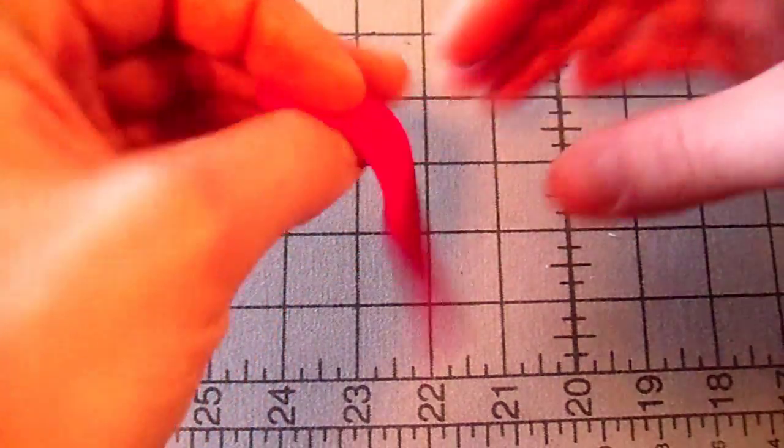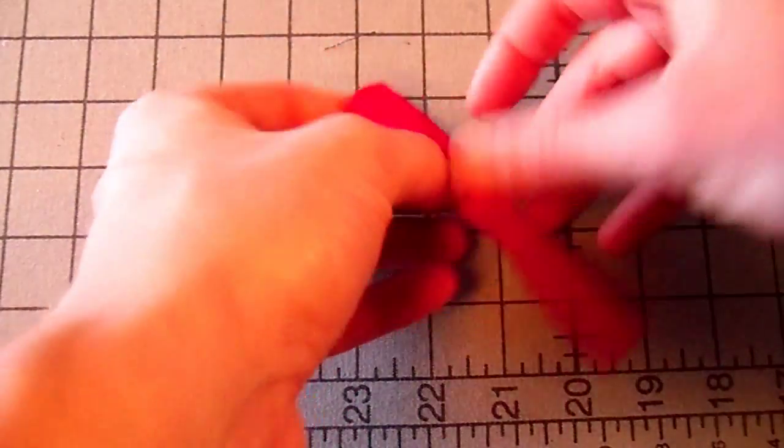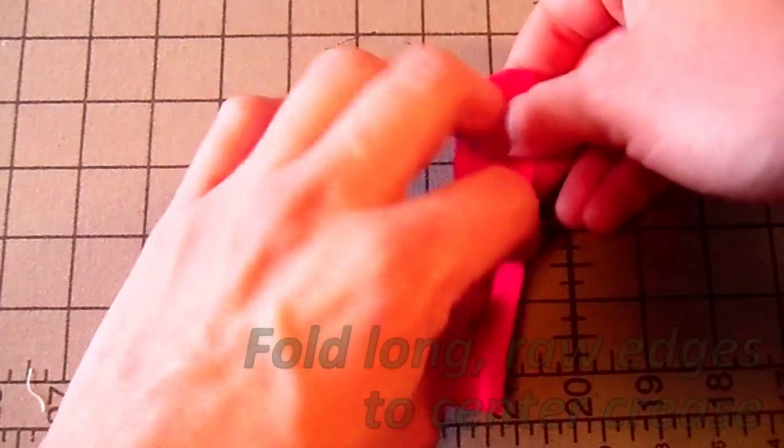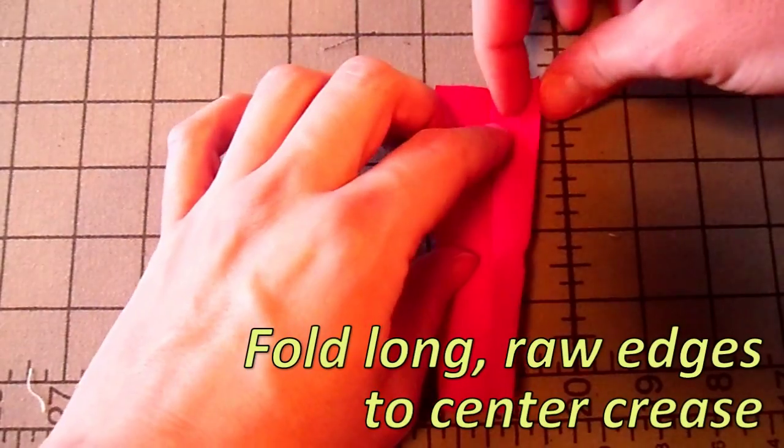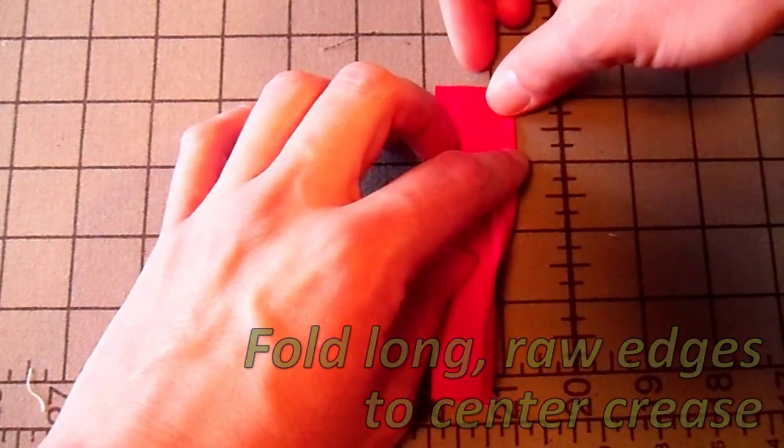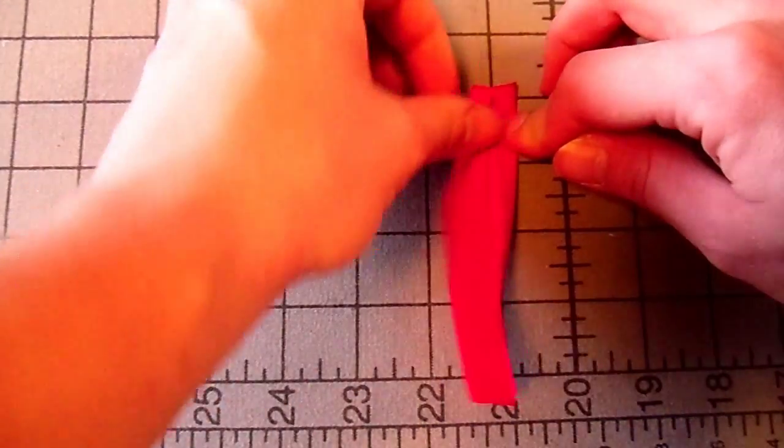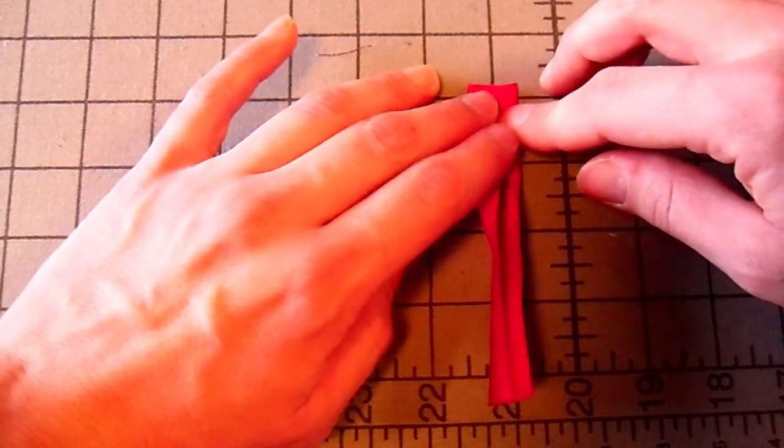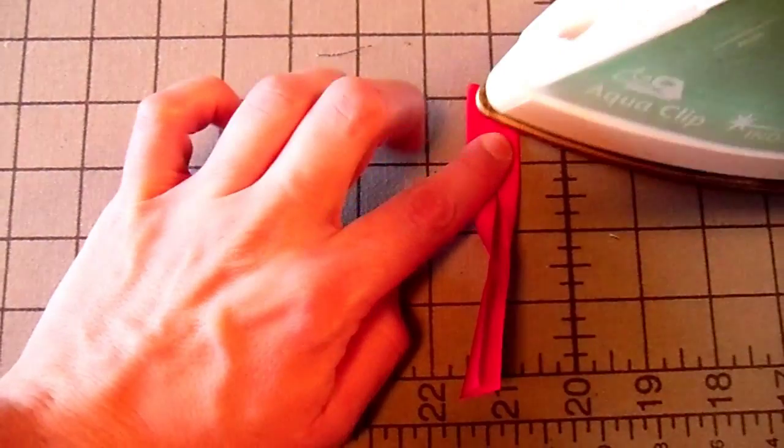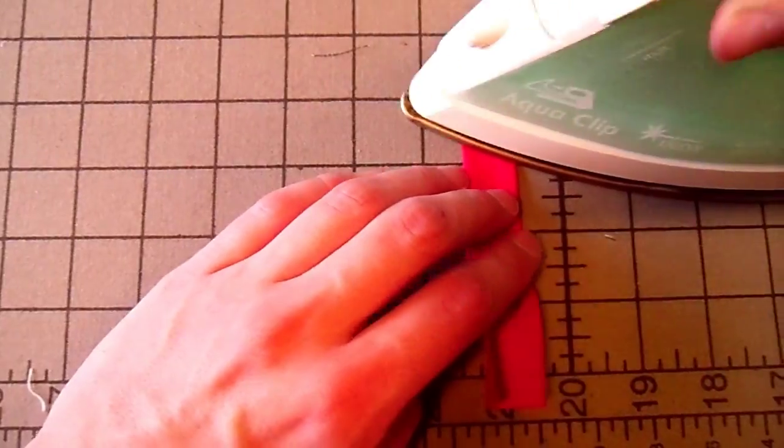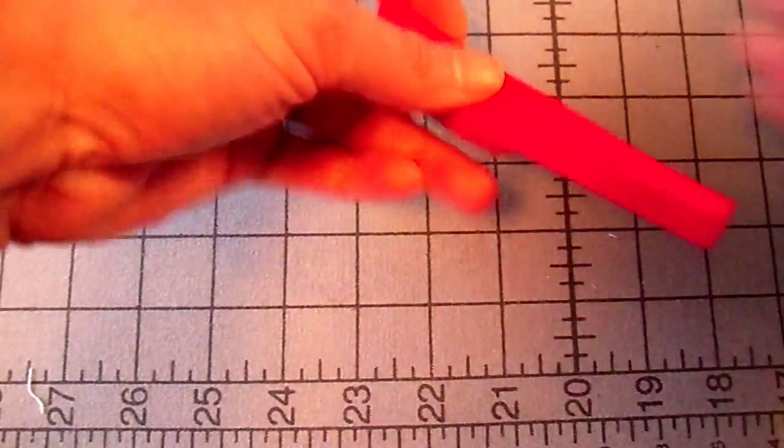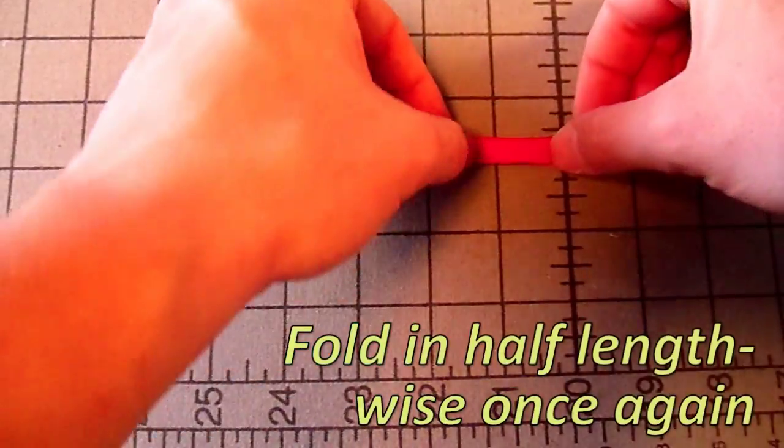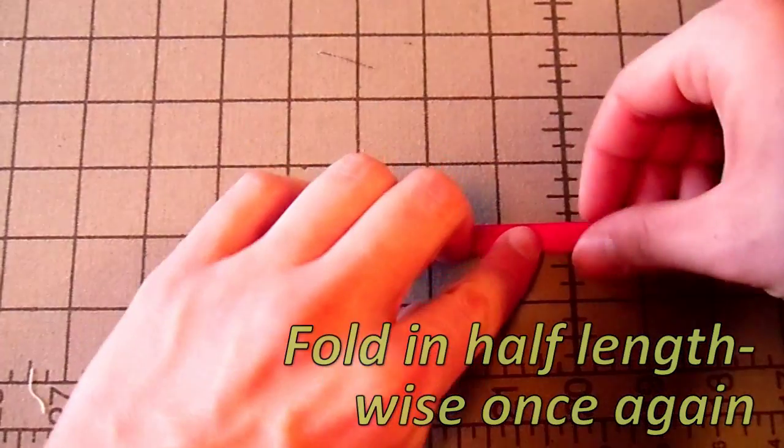Now fold the piece in half lengthwise and press. Then fold the long raw edges to the center crease you just made. Finally fold in half lengthwise again and press.